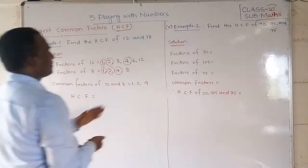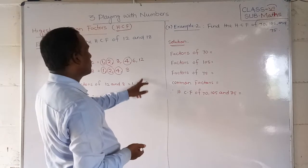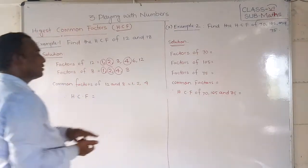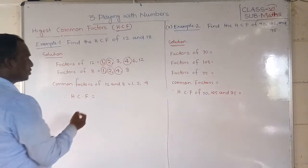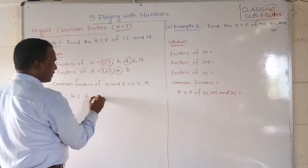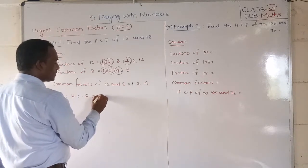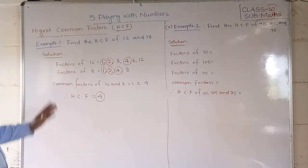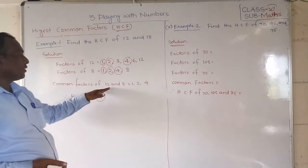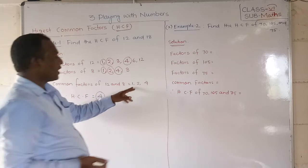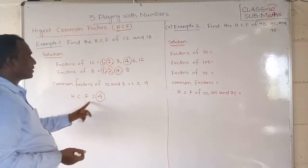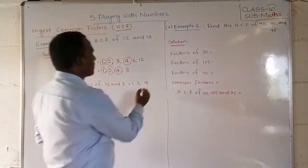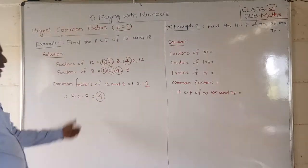So what is the highest common factor? Students, 4 is the highest common factor. So hence, HCF is equal to 4. Did you understand? The common factors of 12 and 8 are 1, 2, 4. But the highest common factor is 4. So we have to take the HCF as 4.